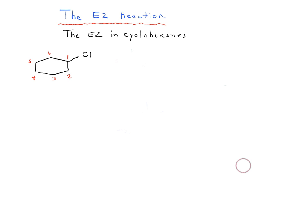We've talked about the E2 reaction and its stereochemistry. We're going to see how this is extremely important when it comes to talking about the E2 reaction with cyclohexanes. Cyclohexanes have these interesting three-dimensional shapes called the chair form, which is going to lead to some complications when it comes to the E2.